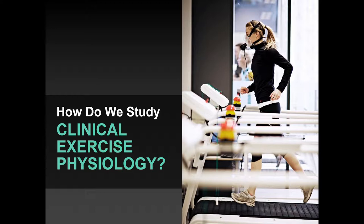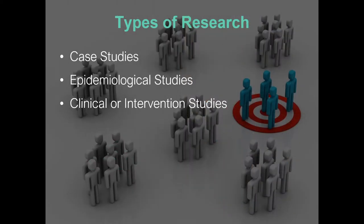About 15 slides left for 15 minutes. How do we study clinical exercise physiology? This can be applied to anything — exercise physiology, biology, chemistry. It's a brief review of research methods. We know a lot about exercise impacts on disease from case studies, epidemiological studies on a large population scale, and clinical or intervention studies broadening our understanding of cause and effect.